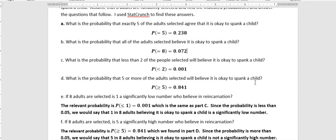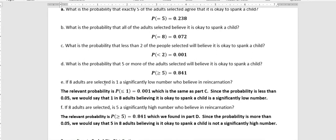Let's answer a couple of questions based on these probabilities. If eight adults are selected, is one a significantly low number who believe in reincarnation? Remember, if you're asking is one significantly low, the relevant probability would be is less than or equal to one significantly low. Less than or equal to one is the same as less than two, right?